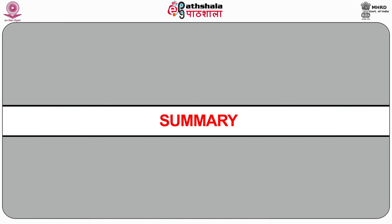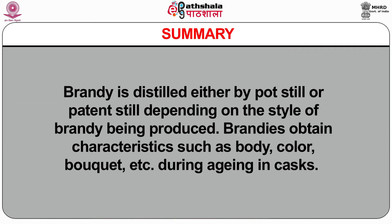To sum up what we have learnt about Brandy: Brandy is distilled either by pot still or patent still, depending on the style of brandy being produced. Brandies obtain characteristics such as body, colour, and bouquet during ageing in casks. All wine producing countries in the world produce brandy, and the best brandies of the world are produced in France as Cognac and Armagnac. Dear students, that's all for today. Thank you.